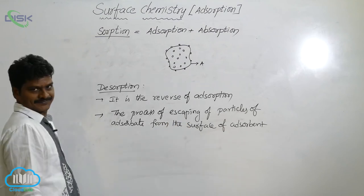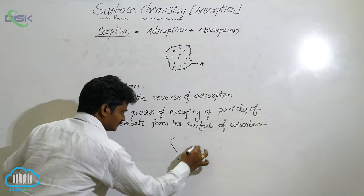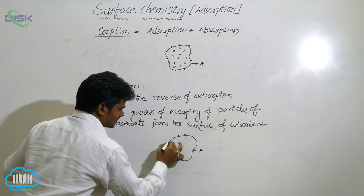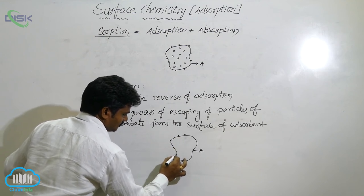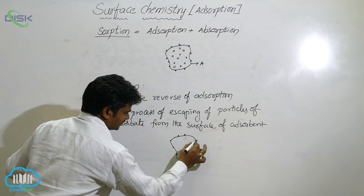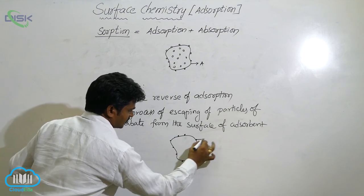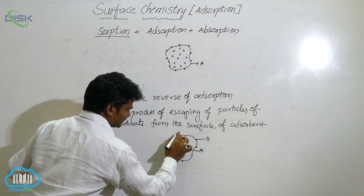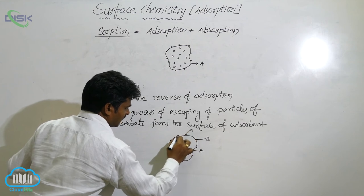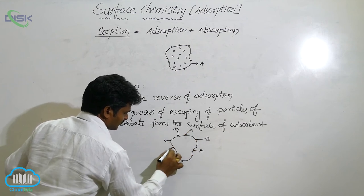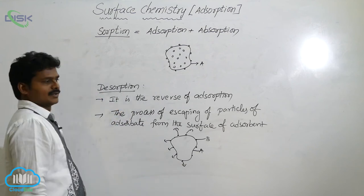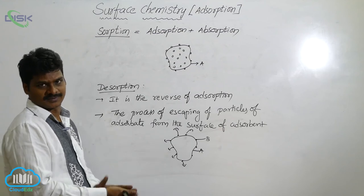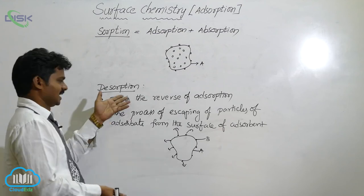These are the particles of B in the condition of adsorption. What happens is these particles escape from the surface — that is called desorption. So simply, desorption is the reverse of adsorption.